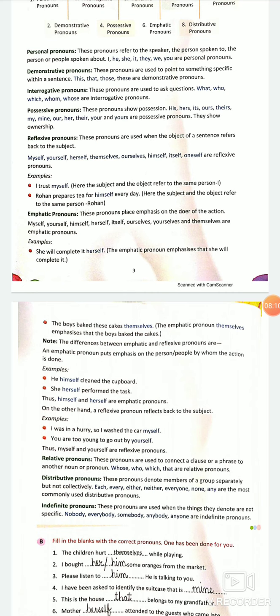He and himself in this sentence is one person only. He cleaned the cupboard himself. But he and himself are written far away. It means here himself is reflexive pronoun. But if I speak the sentence, he himself cleaned the cupboard. He and himself are written together here. It means it is emphatic pronoun. Himself here is emphatic pronoun because it is written with the subject.